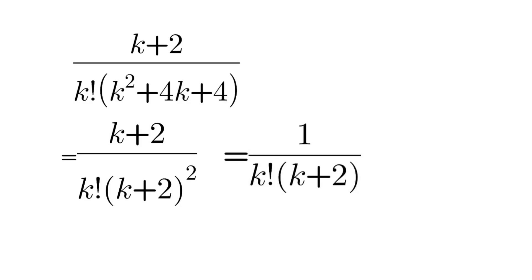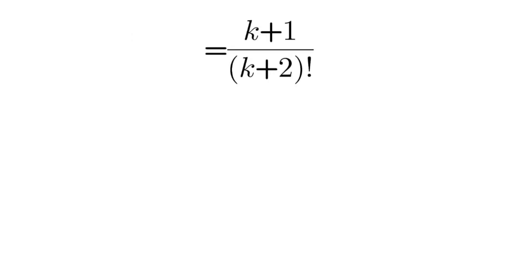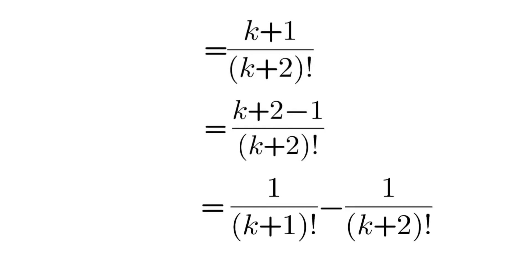Multiplying (k+1) both numerator and denominator, we'll get (k+1) by (k+2) factorial. Now we can write k+1 as k+2 minus 1, and then separating will get two fractions like this and then simplifying the final result.